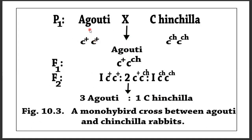The next cross is between agouti and chinchilla. The F1 generation is agouti, showing complete dominance of the agouti allele over the chinchilla allele. The F2 generation gives a ratio of 3:1.